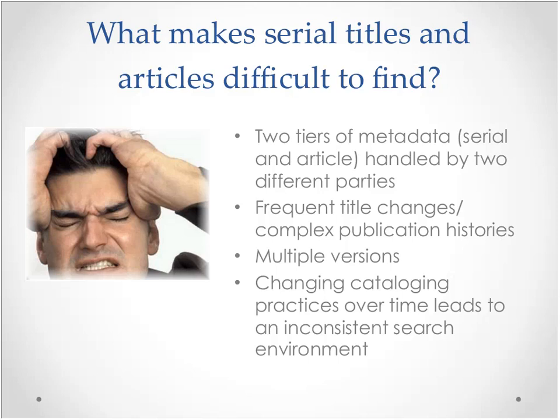Another problem for access stems from the fact that serial publications frequently undergo title changes, and with each title change, a new bibliographic record is created. Following the history of a periodical title through time in our current systems is like putting together a puzzle, and users don't have the time or patience for puzzles — they just want the resource. The discovery process can also be complicated by the fact that serials are often issued in multiple versions: print, electronic, and sometimes microform. This problem of multiple versions has led to the proliferation of nearly identical records, and having too many records for the same title can lead to the user missing the one record that would best suit their research need.